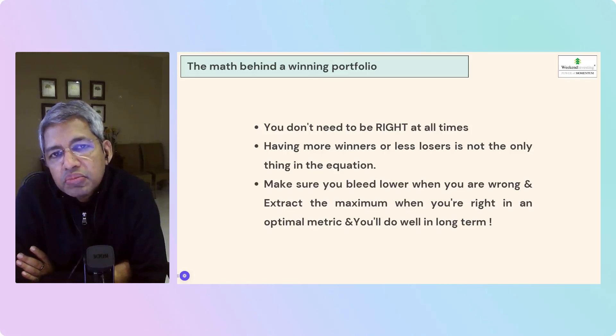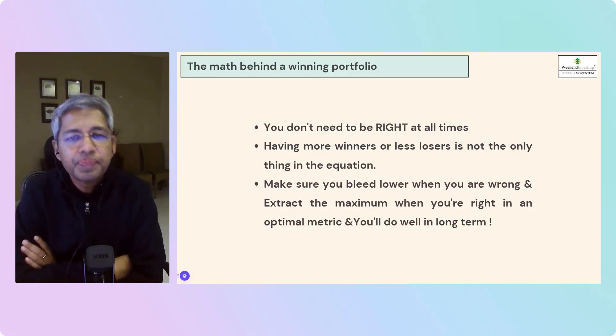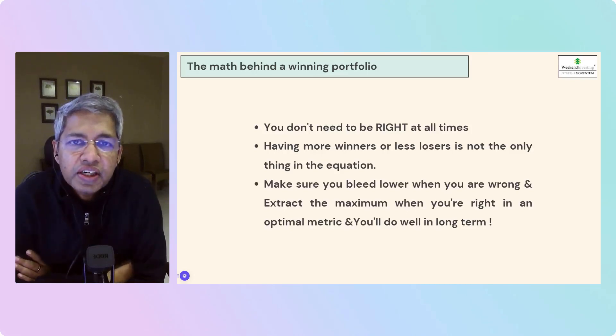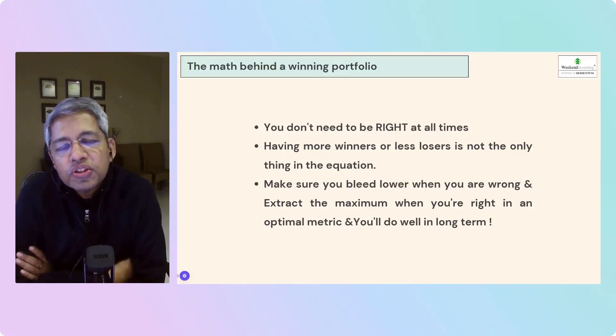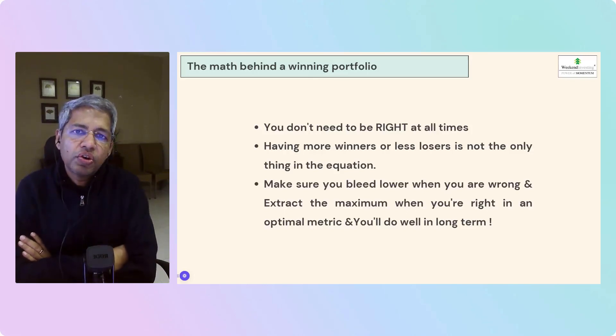Having more winners and less losers is not the only thing in the winning equation. You will find everybody running for 80% probability of win, 90% probability of win, but the professional trading world tells you the opposite. You need not be above 50% or above 60%, but what needs to happen is that whenever you are right that win has to be big, whenever you are wrong that loss has to be small. These two put together along with your win-loss ratio will set your overall balance sheet right.